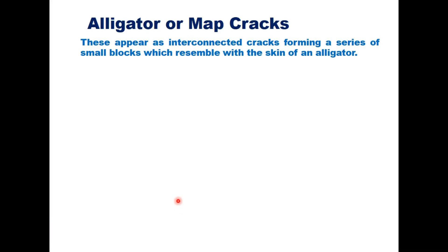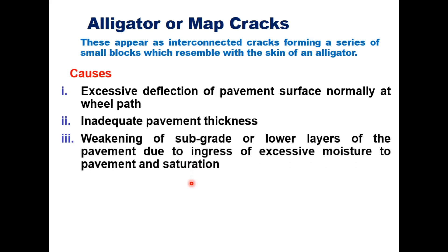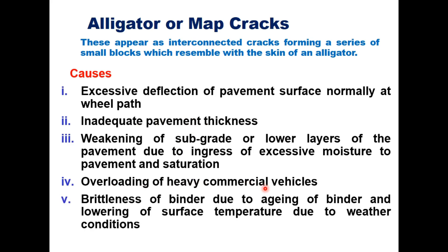Alligator or map cracks appear as interconnected cracks forming a series of small blocks resembling the skin of an alligator. Causes include excessive deflection of the pavement surface at the wheel path, inadequate pavement thickness, weak subgrade, weak lower layers due to ingress of excessive moisture and saturation, or overloading by heavy commercial vehicles. Inadequate pavement thickness and overloading are major factors. Brittleness of the binder due to aging and lowering of surface temperature due to weather conditions can also contribute.